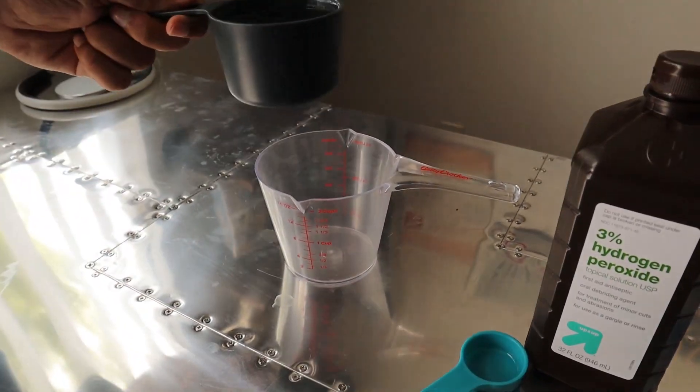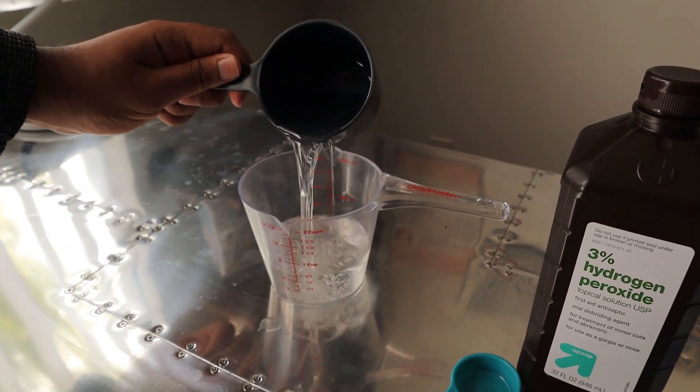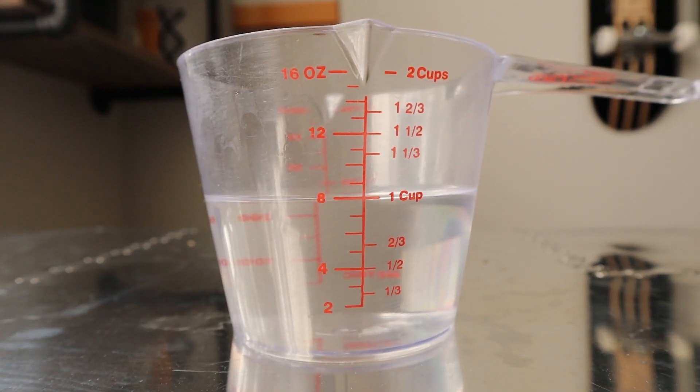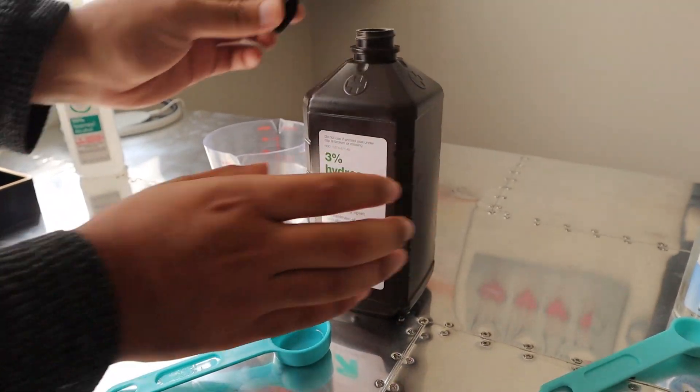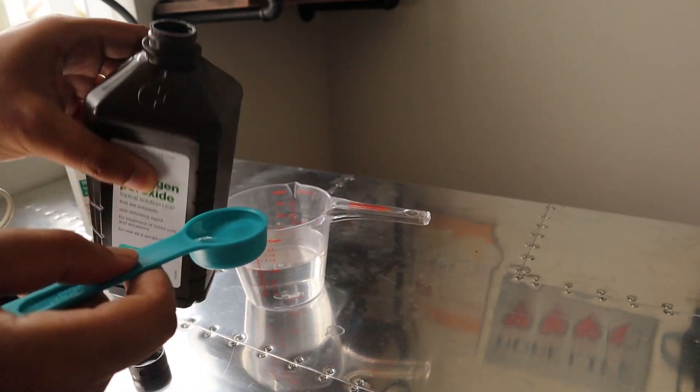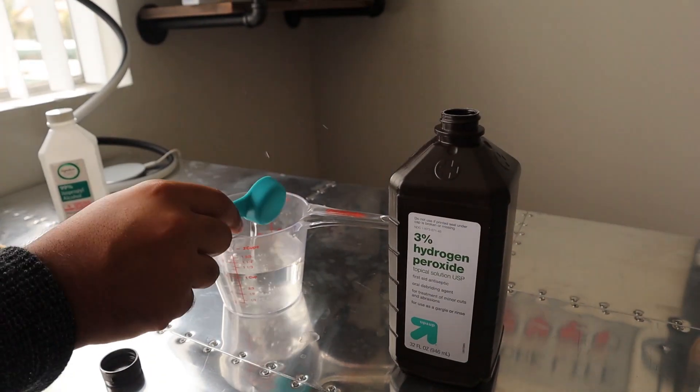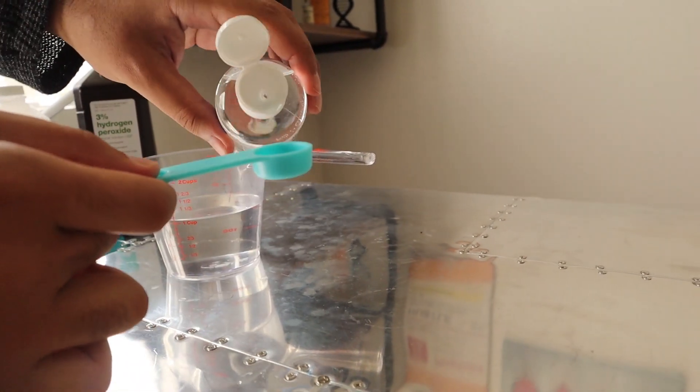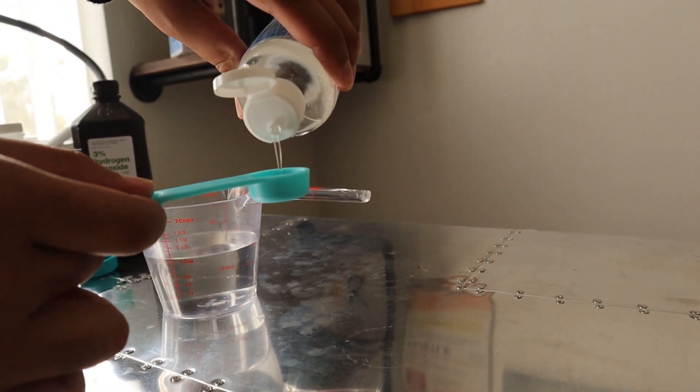After you have the alcohol measured out, pour it into your measuring cup. Then measure out your 1 tablespoon of 3% hydrogen peroxide, pour that in too, and 1 teaspoon of glycerin, and pour that in the measuring cup as well.